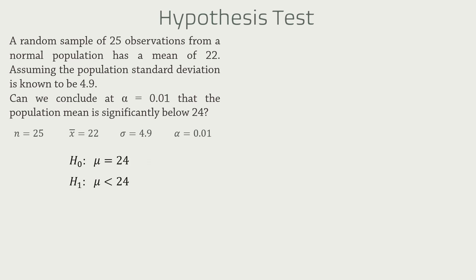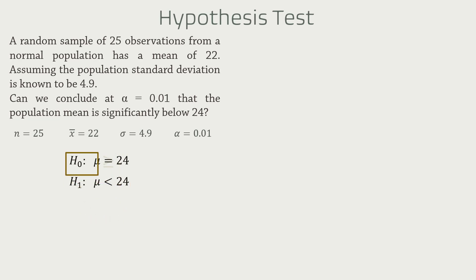Note that technically, the null and alternative hypotheses are supposed to be mutually exclusive. In essence, the null should be mu greater than or equal to 24. However, to simplify our explanation, we will simply keep mu equal to 24.